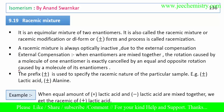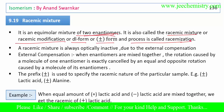Here are some points to be remembered about the racemic mixture. It is an equimolar mixture of two enantiomers. It is also called racemic mixture, racemic modification, DL form, or plus-minus form. The process of forming it is called racemization.